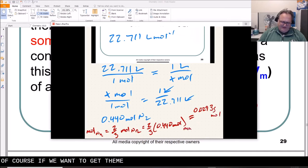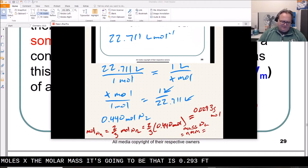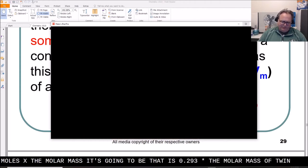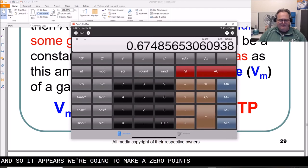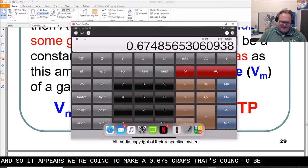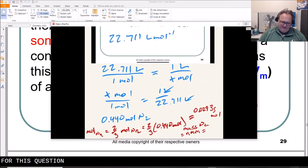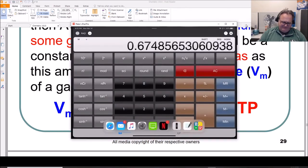And of course, if we want to get the mass of sodium out of that, that's going to be moles times the molar mass. It's going to be that 0.0293 sub 5 moles multiplied by the molar mass of 22.99 grams. And so it appears we're going to make 0.675 grams. That's going to be the answer for this question.